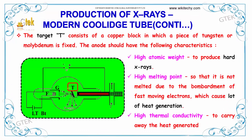The target T consists of a copper block in which a piece of tungsten or molybdenum is fixed. The anode has the following characteristics: it has a high atomic weight to produce hard X-rays, a high melting point so it is not melted by the bombardment of fast-moving electrons, and high thermal conductivity to carry away the heat generated.